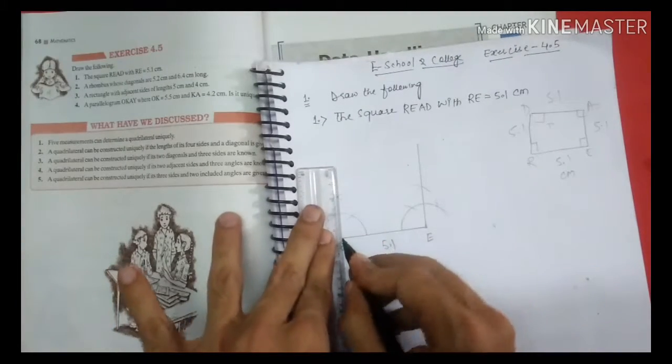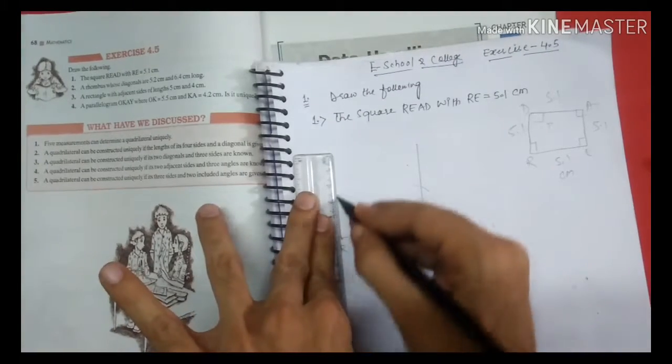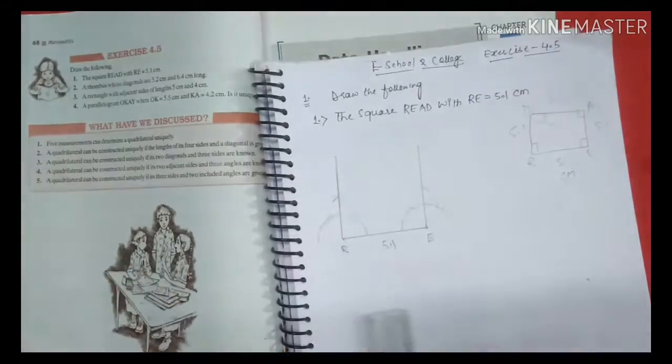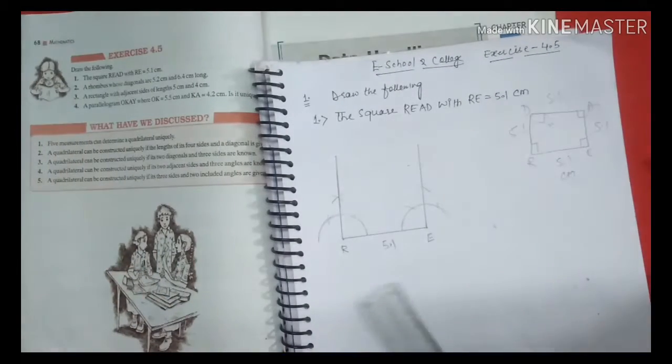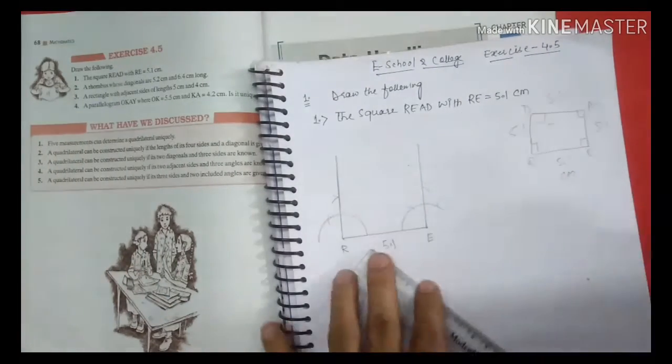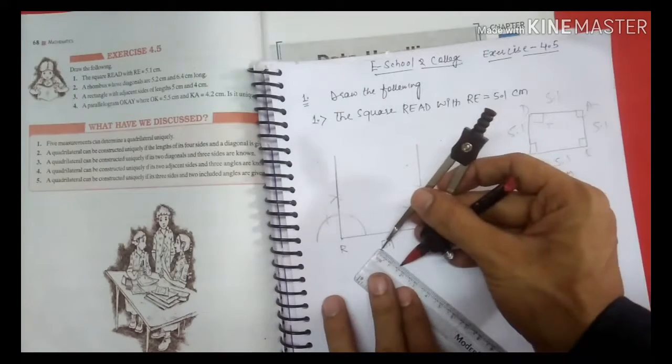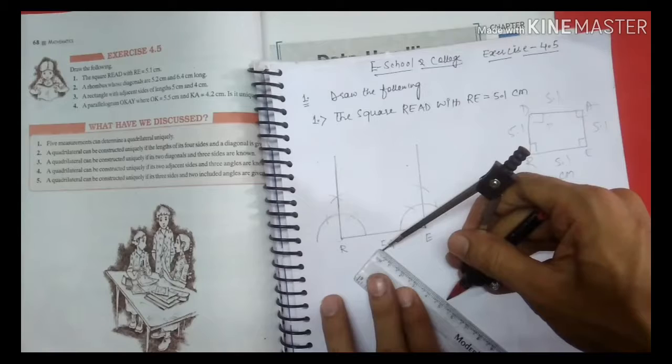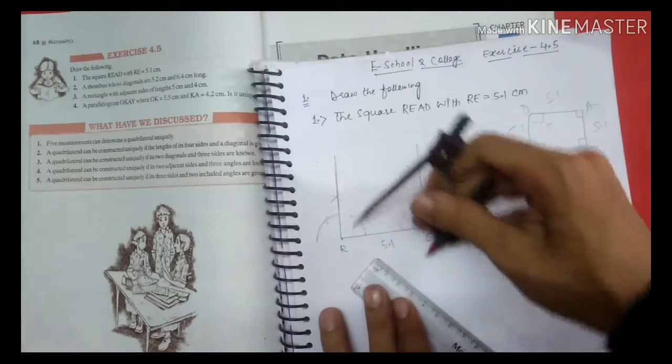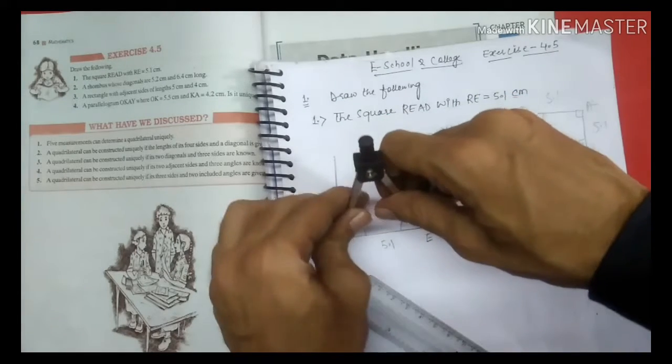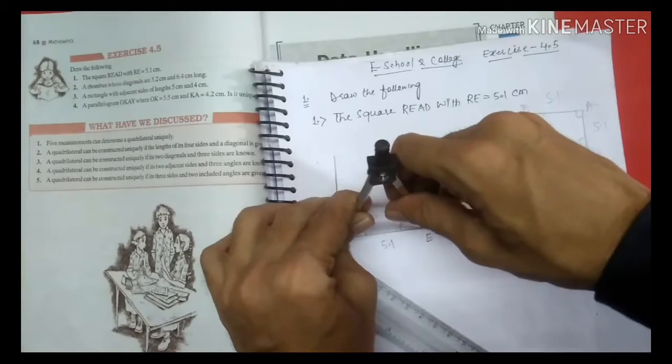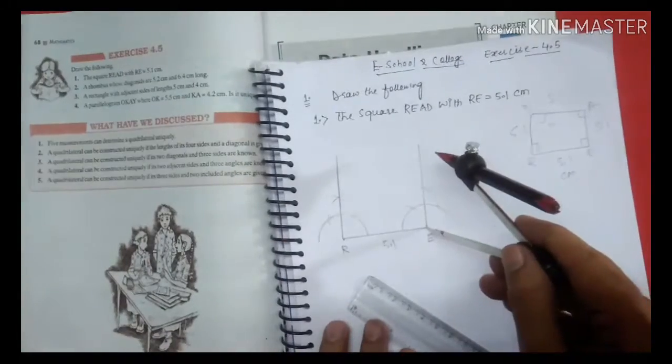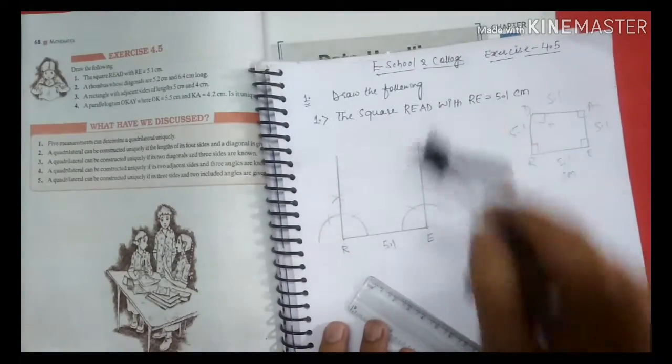We connect with R and 5.1 is the length, so we measure 5.1. This length is 5.1, this is 5.1. Here cut, here cut.